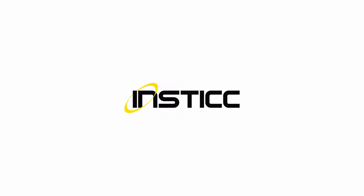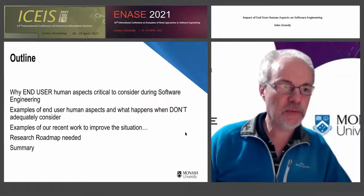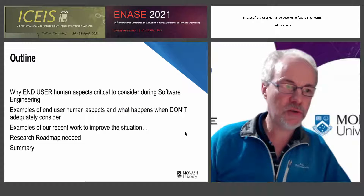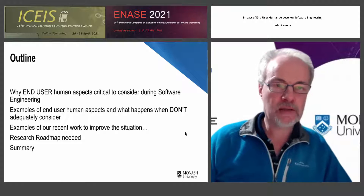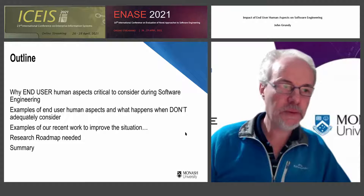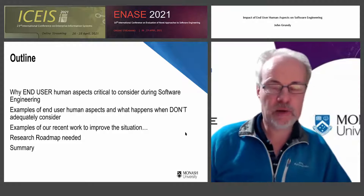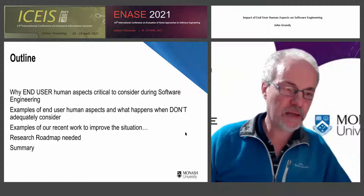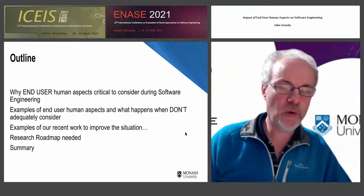What I'm going to talk about today is the aspect of software systems from the perspective of the end user — how do the different characteristics of our end users impact the way we engineer software systems? I'll give you some examples of these, and a counter example of when not adequately taking these into account is a major problem. I'll also talk about some of our recent work in this area.